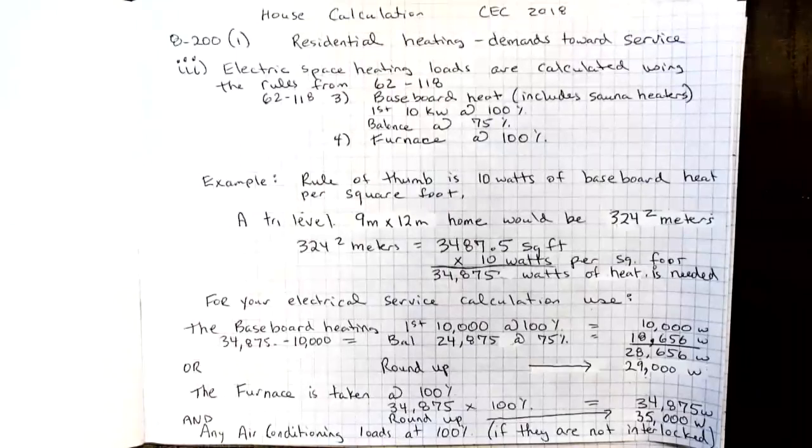We take the first 10,000 watts at 100% and the balance at 75%. The reason for this adjustment is because baseboard heat has its own thermostat, each baseboard heater, each area. That means they're going to cycle on and off and they're not always going to come on at the same time.